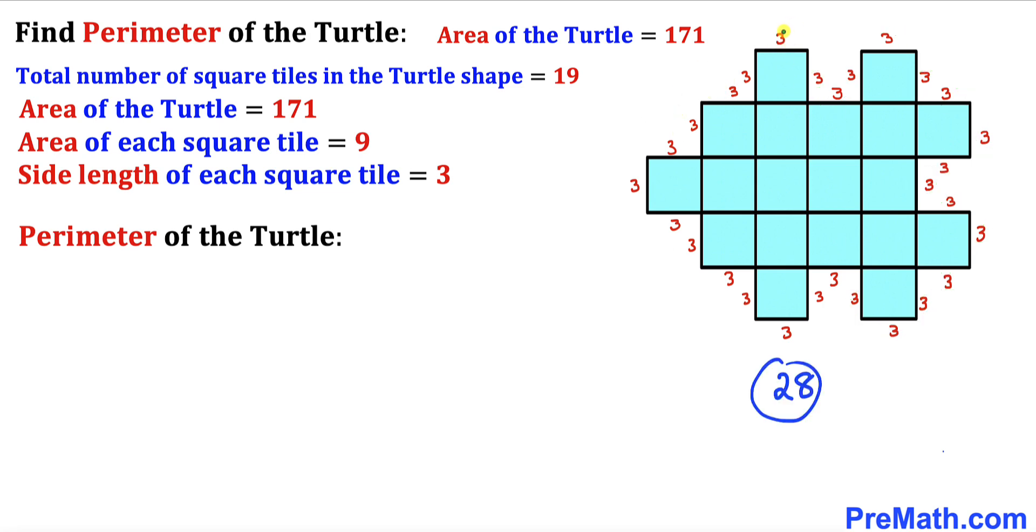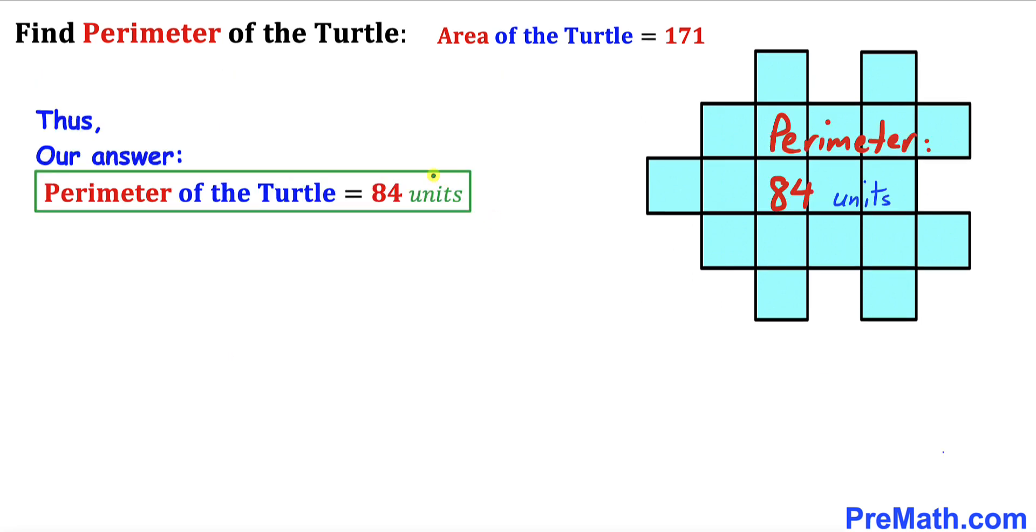We know that each side is 3 units long. Therefore the perimeter is going to be simply 28 times this length 3. So I can write down 28 times 3, and that's going to give us the perimeter. That is going to give us 84 units. Thus the perimeter of this turtle shape turns out to be 84 units.